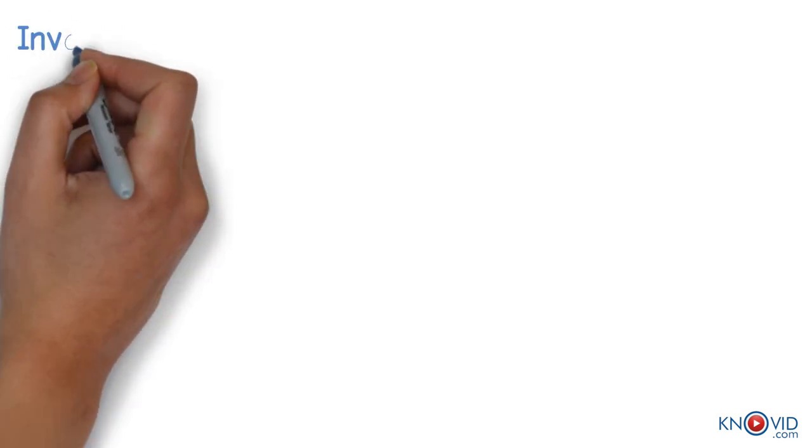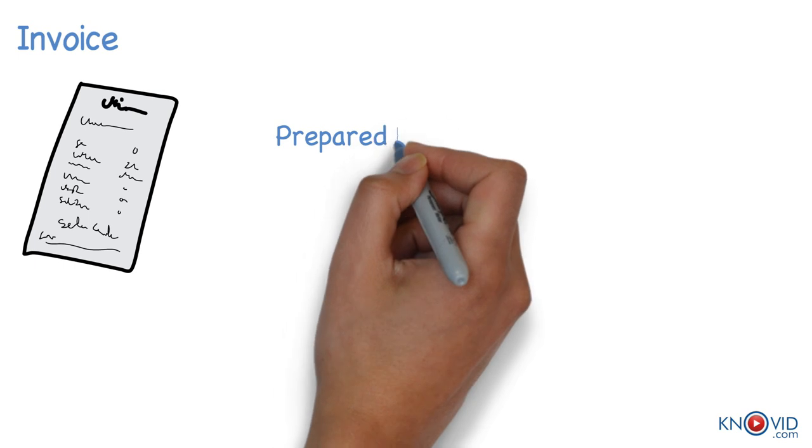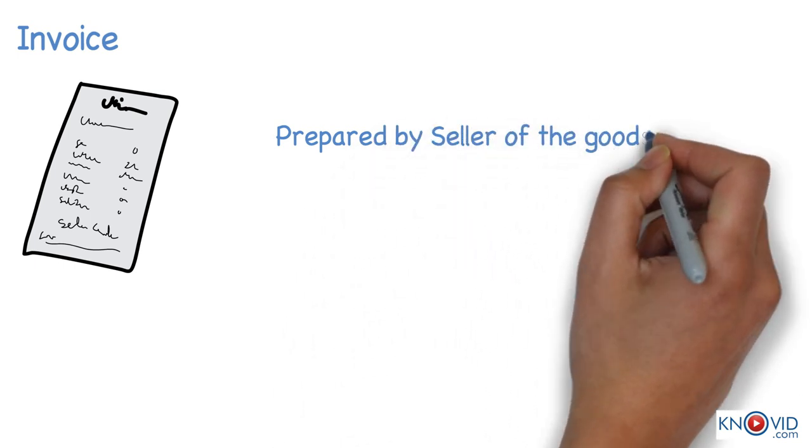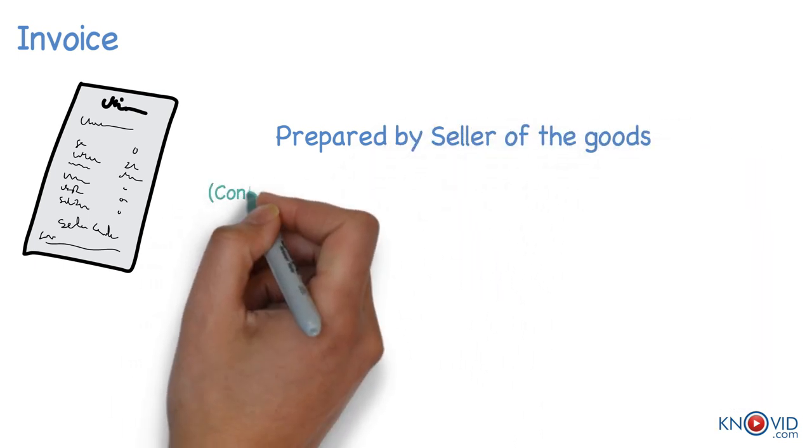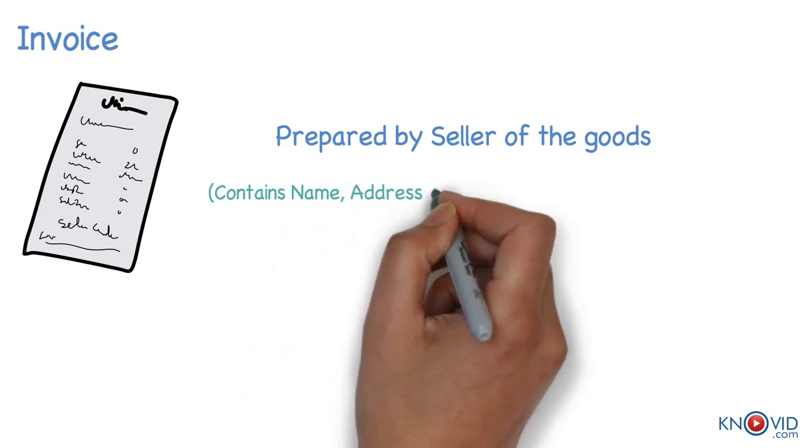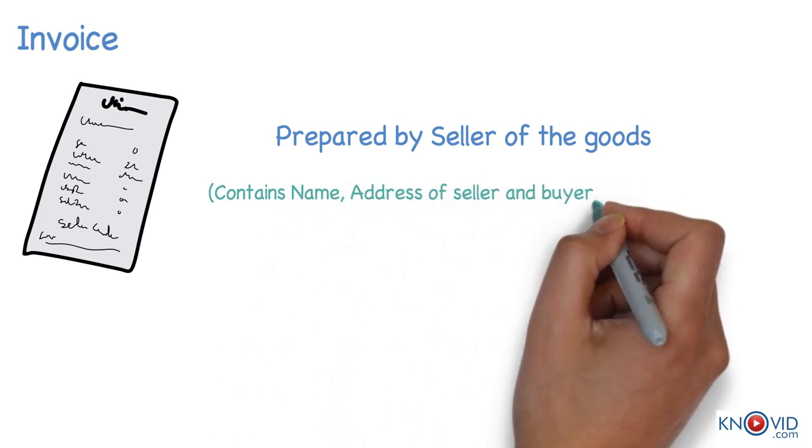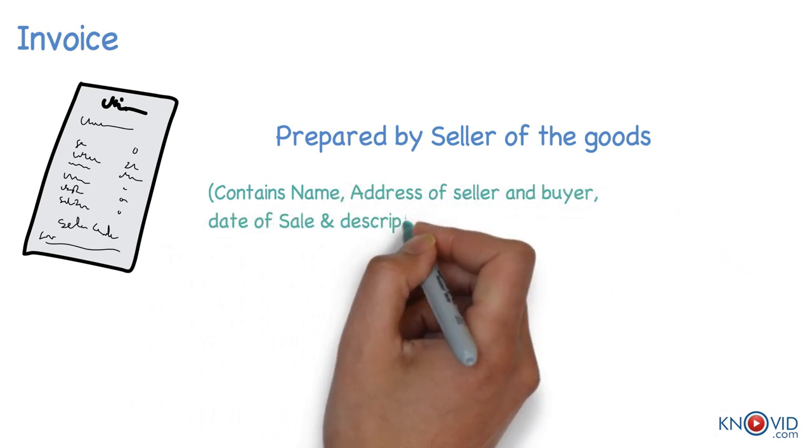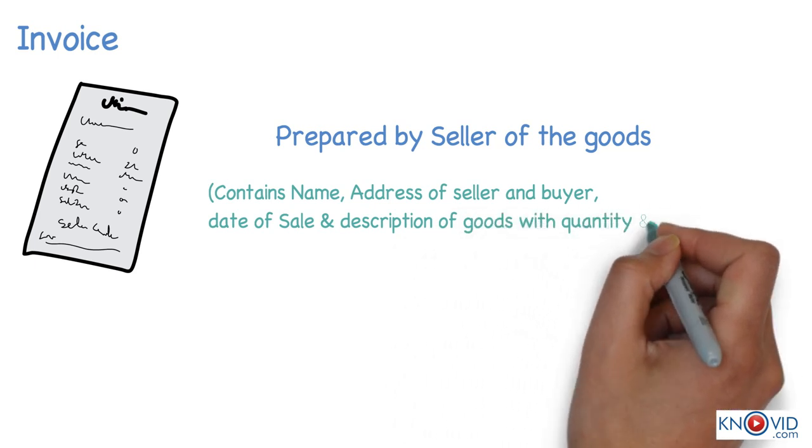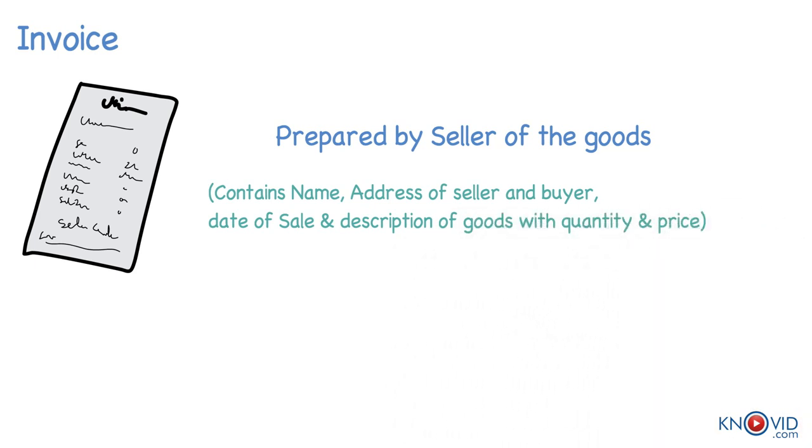Invoice is a business document which is prepared when one sells goods to another. The statement is prepared by the seller of goods. It contains the information relating to the name and address of the seller and the buyer, the date of sale and the clear description of goods with quantity and price.